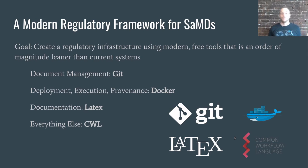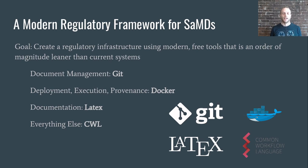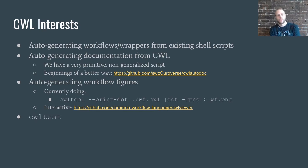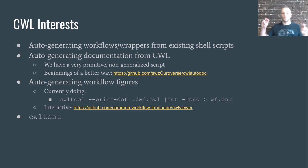I consider CWL to be one important tool in the toolset I'm building to create a model to translate open source software for clinical use. Other tools that work really well are Git, Docker, and LaTeX — and I think all four tools work really well together. We'd also be interested in anything that would help us generate CWL from a legacy script — any sort of tooling that would help us jumpstart that process and save time would be very interesting.